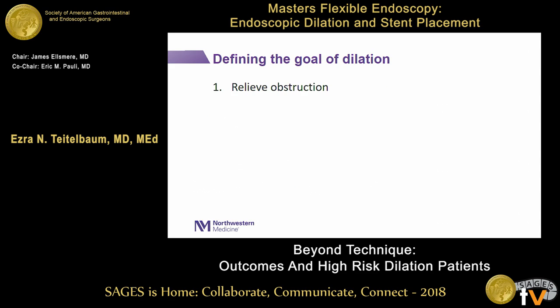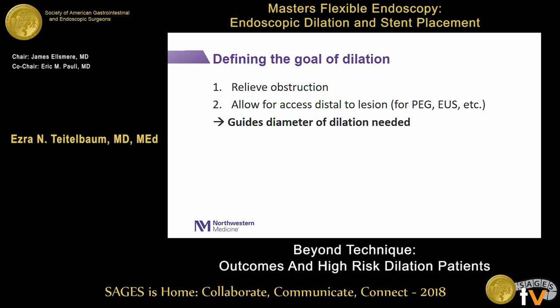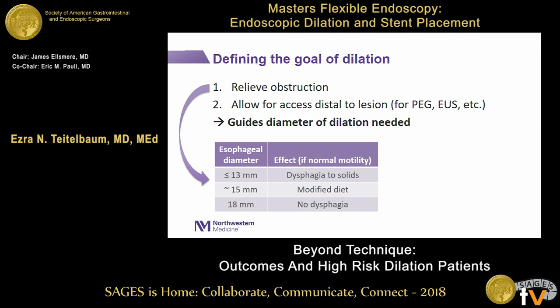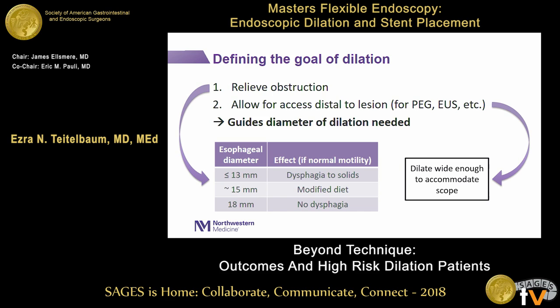Understanding the goal of dilation is key. Most simply, the goal is to release obstruction and restore enteric flow, but in some instances the goal is to allow distal access — for example, a patient needing EUS, or a stroke patient who just needs a PEG placed distal to the lesion. This guides the target diameter. For normal esophageal motility, strictures of 13 millimeters or less cause dysphagia to all solids; at 18 millimeters patients are symptom-free; somewhere in between they tolerate a soft food diet. If you're just dilating to pass an instrument, you only need to accommodate that instrument's diameter.